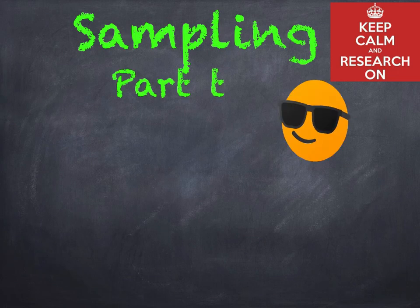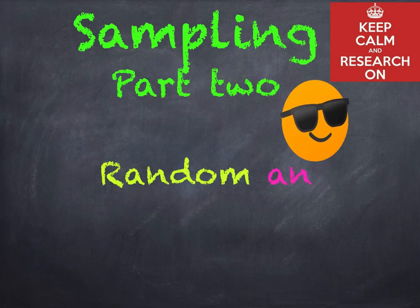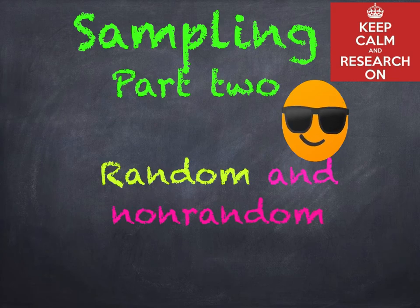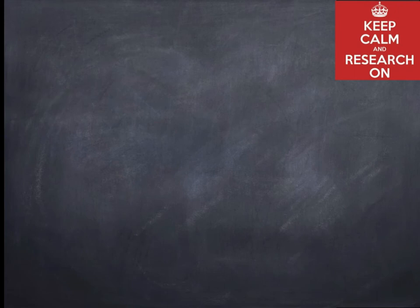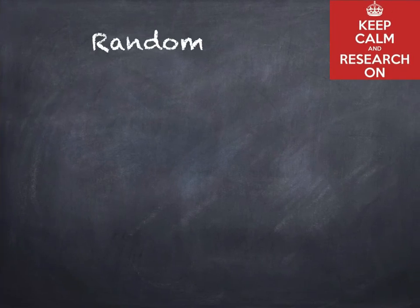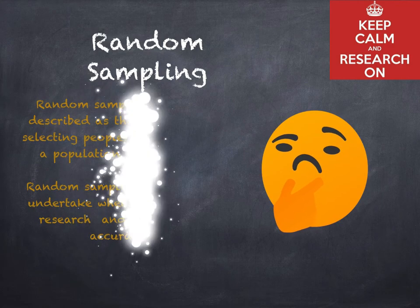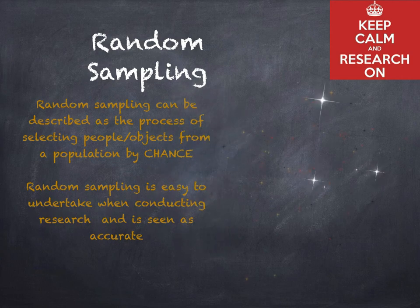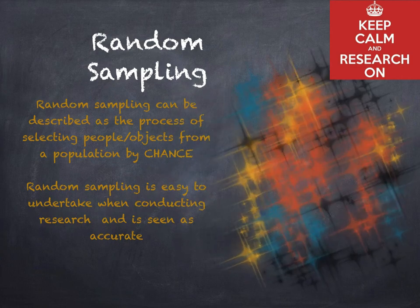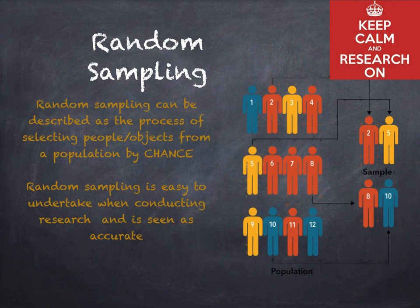Welcome to this short but sweet presentation on sampling part 2: random and non-random. Random sampling can be described as a process of selecting people from a population by chance. Random sampling is easy to undertake when conducting research and is often seen as pretty accurate.